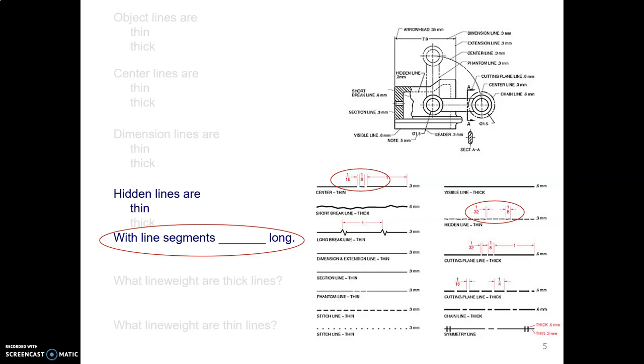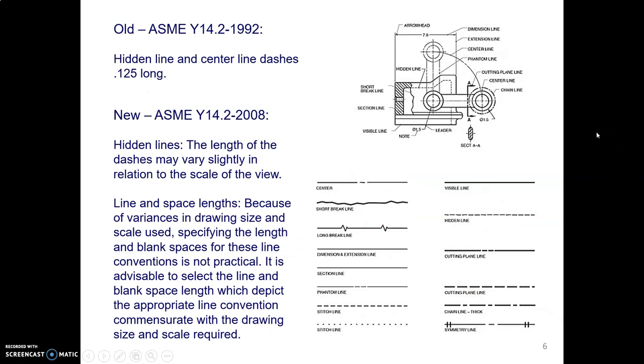Hidden lines, they have dashes that are an eighth of an inch long. ASME used to say they must be an eighth of an inch. They've now got some weasel words in their latest version of the standard. So they say, yeah, do your best.